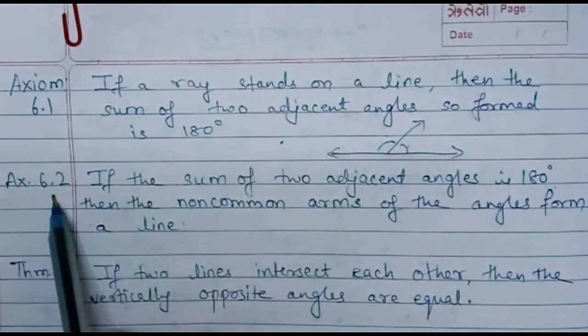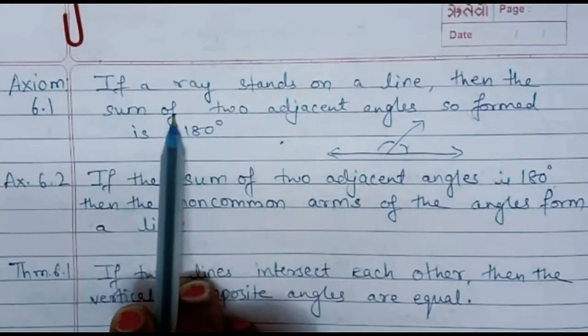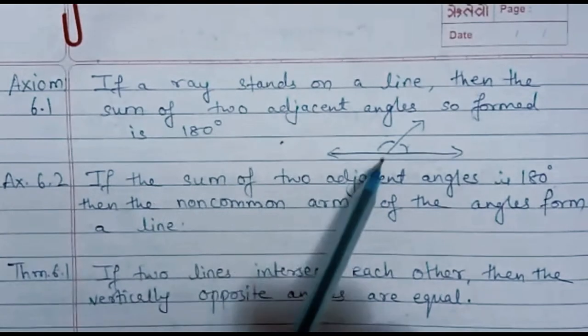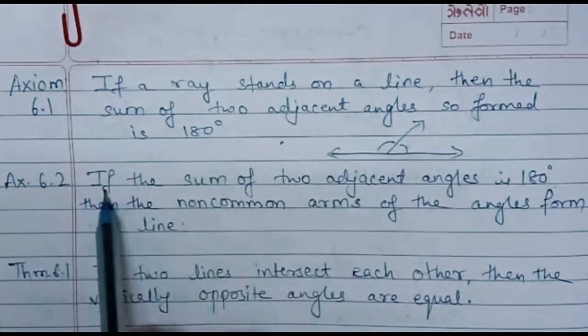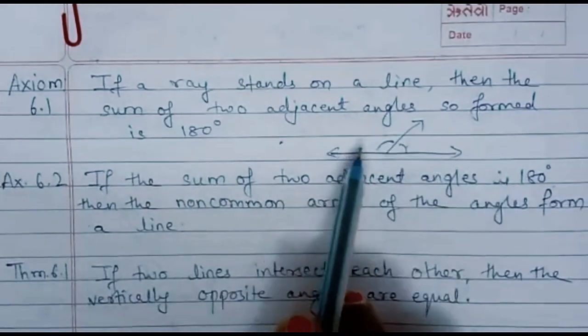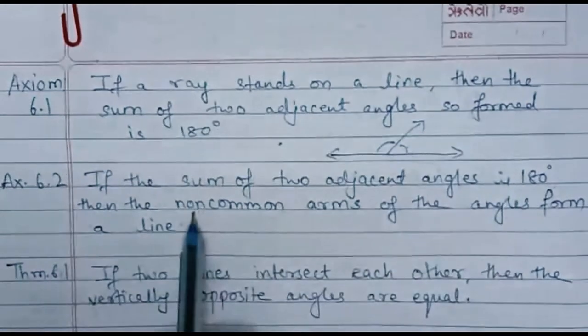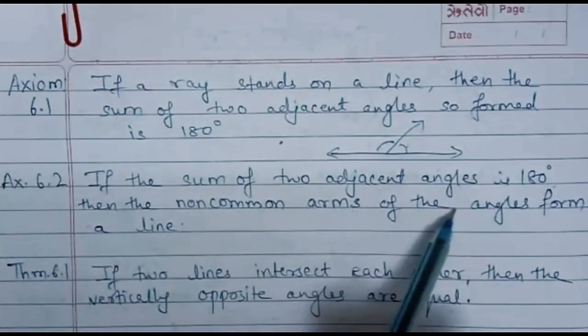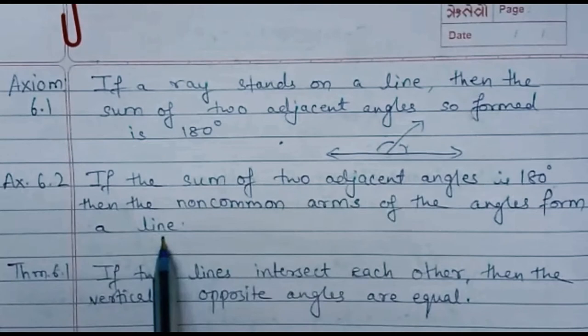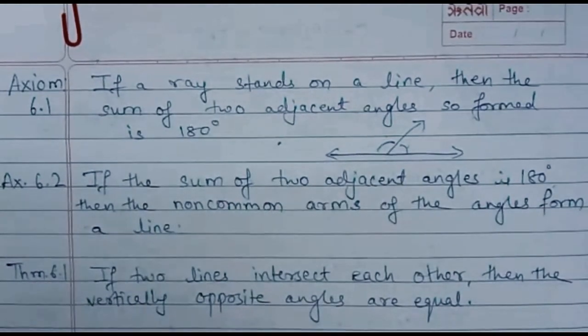Now we have axiom 6.2, the second result which is just converse of the first statement, means reverse of this condition. So if the sum of two adjacent angles is 180, these two are adjacent angles also, and if the sum is 180 then the non-common arms of the angles will form a line, and hence the axiom is true for the given result.